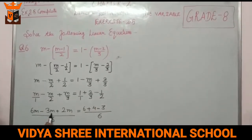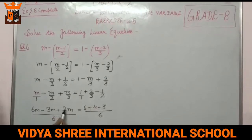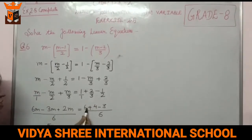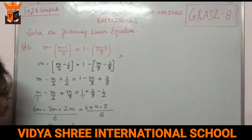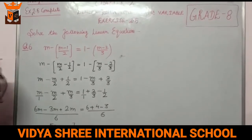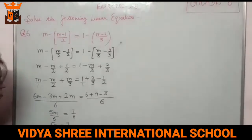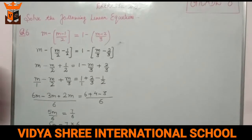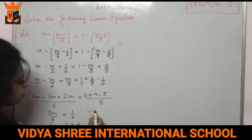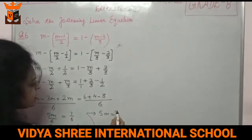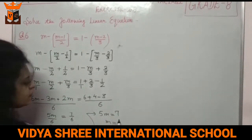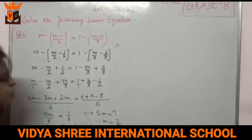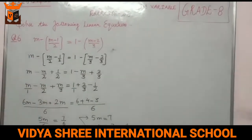6M minus 3M is 3M, plus 2M gives 5M. On the right, 6 plus 4 is 10, minus 3 gives 7. So 5M/6 equals 7/6. The 6 cancels on both sides, giving 5M equals 7. Therefore M equals 7/5, which is the answer.